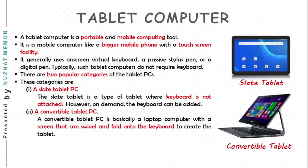A tablet computer is a portable mobile computing tool — like a bigger mobile phone with a touch screen. It generally uses an on-screen virtual keyboard, a passive stylus pen, or a digital pen. There are two categories: the slate tablet PC, where a keyboard is not attached but can be added on demand, and the convertible tablet PC, which is a laptop with a screen that folds onto the keyboard to create a tablet.